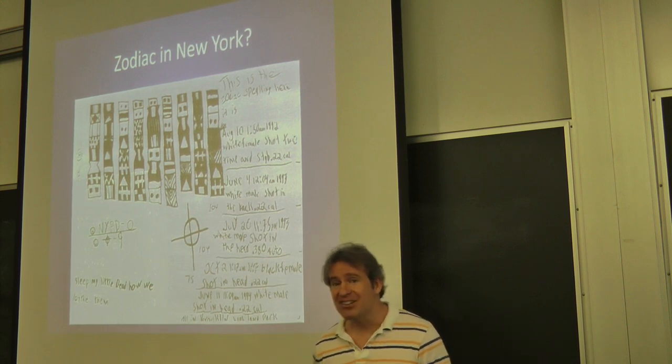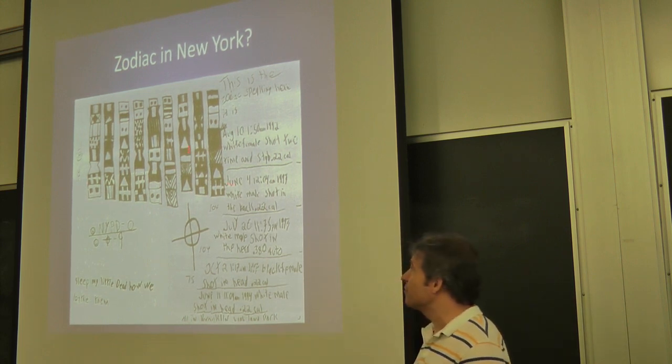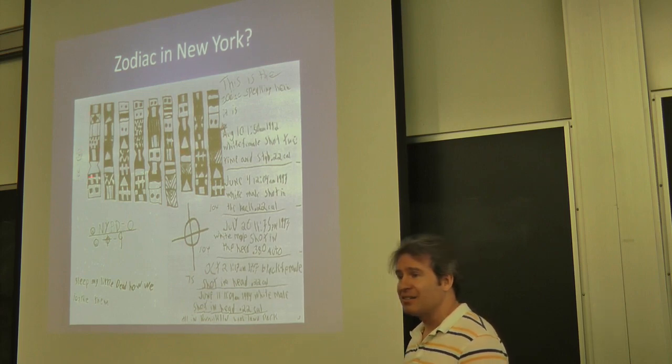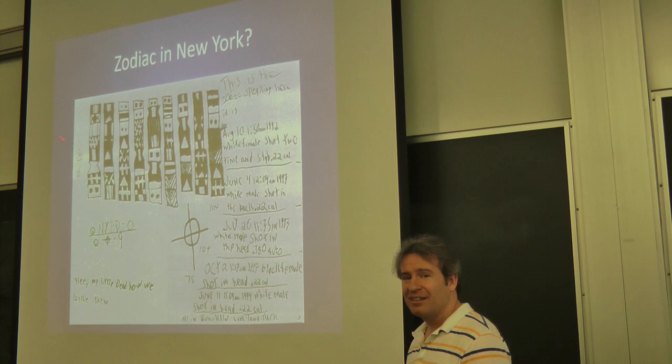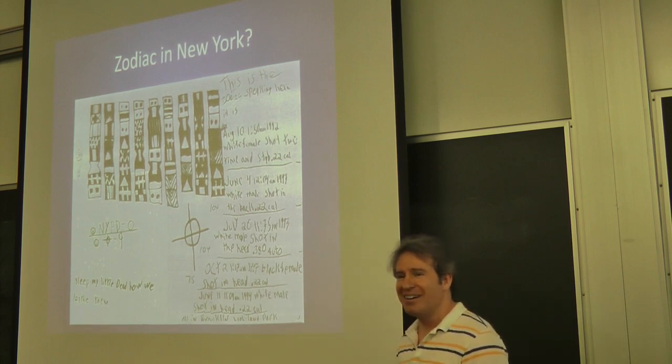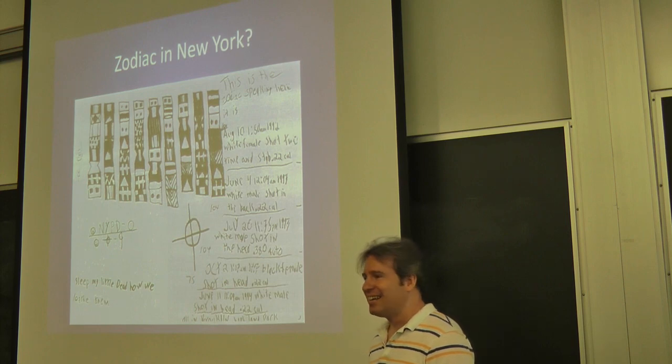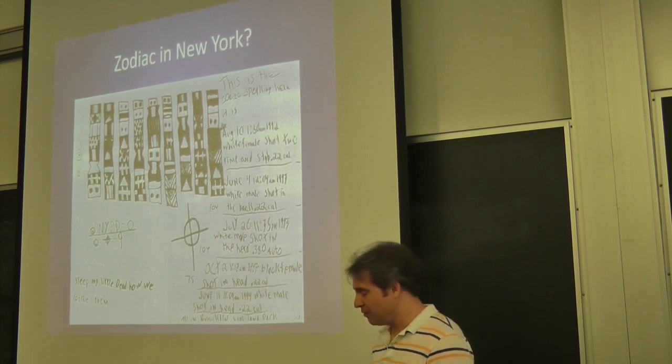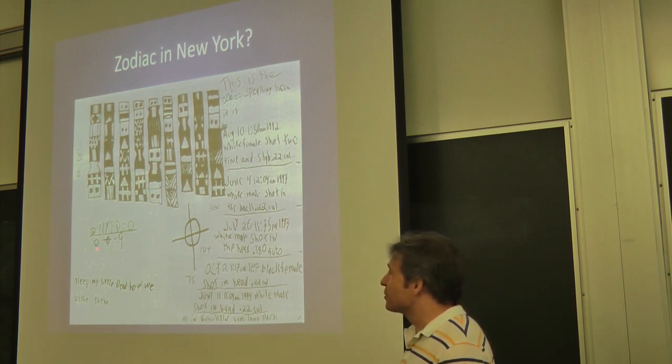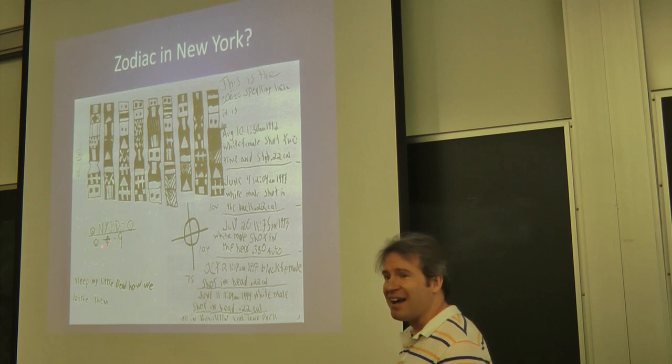And he was sending in ciphered communications. Not the same style, but in ciphered message. Actually, some people say these are naval flags. Does that look right to you guys? I'm not trying to pin this on anybody. Some flags go out of date. Could be an older system. And here again, look. NYPD, zero. And then a smiley face. The Zodiac symbol, nine.